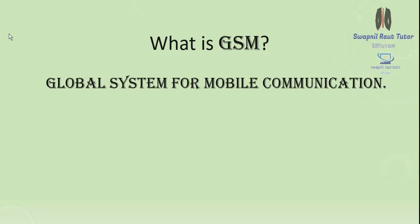GSM is a 2G architecture. In the 1G architecture, calls are manually operated — an operator is always there to operate the call manually. 3G means UMTS, the Universal Mobile Telecommunication System. 4G stands for LTE, which means Long Term Evolution.